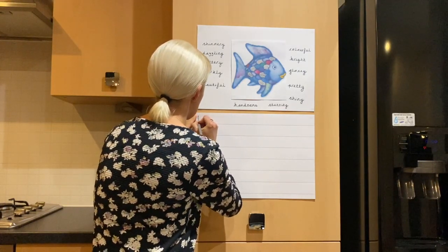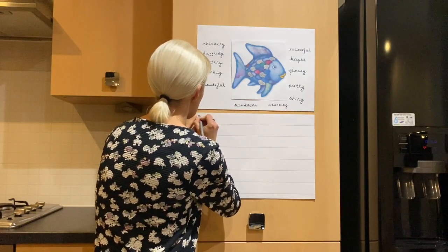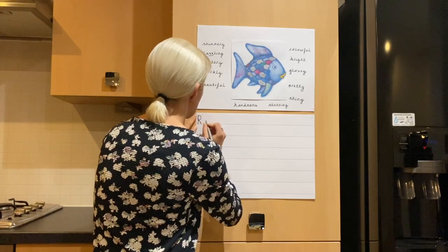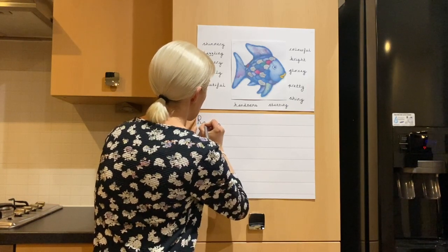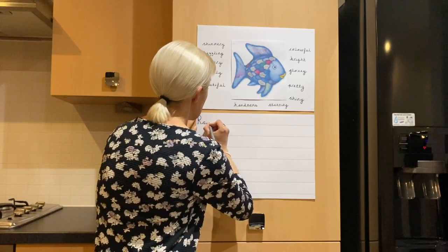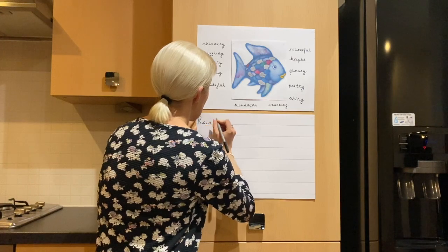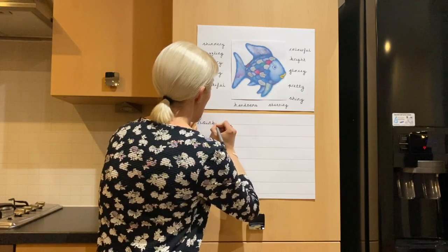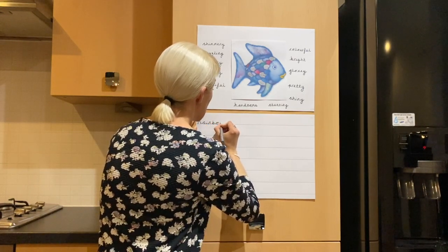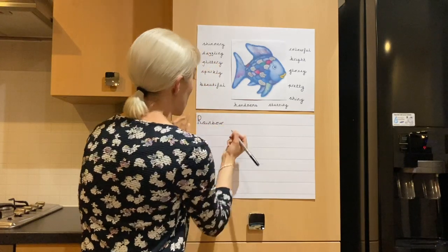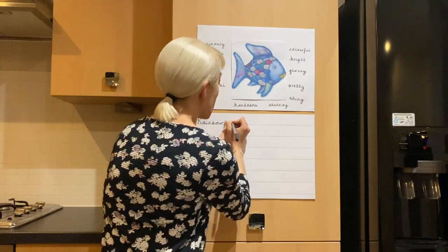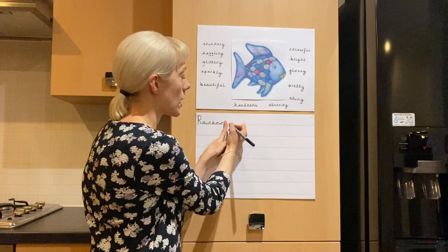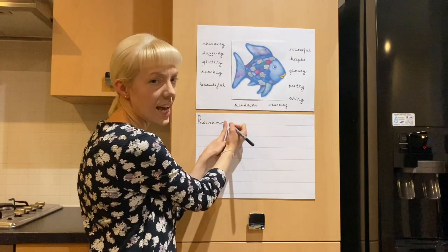Rainbow Fish with a capital R — R, A, N... F, O — rainbow. I'm going to write Fish with a capital F as well because it's his name.